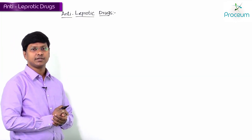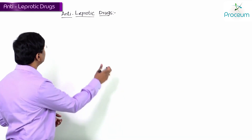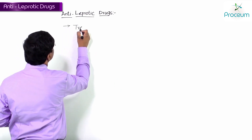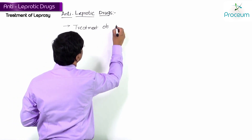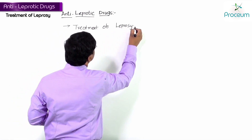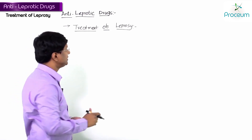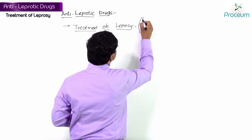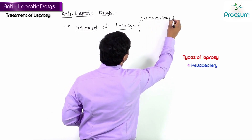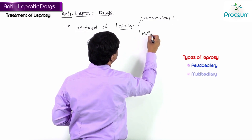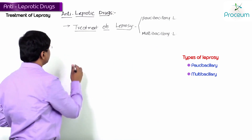If you see leprosy in treatment, we have two types: paucibacillary leprosy and multibacillary leprosy. Let me discuss the treatment of leprosy. We have paucibacillary leprosy on one side and multibacillary leprosy on the other.